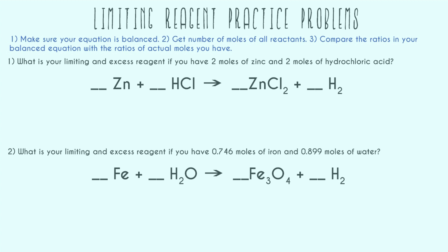For all these practice problems, we're going to follow three steps. One, make sure your equation is balanced — I can't tell you how many times I've seen someone do an entire problem, get it wrong, and it's because they didn't balance in step one. Don't assume your equations are going to be balanced. Two, get the number of moles of all the reactants. Three, compare the ratios in your balanced equation with the ratios of actual moles you have, and then you can determine your limiting reagent.